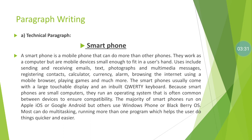A smartphone is a mobile that can do more than one thing — they work as a computer but a mobile device small enough to fit in the user's hand. Uses include sending or receiving emails, text messages, multimedia messages, registering contacts, calculating currency, setting alarms, browsing the internet, using a mobile browser, playing games, and much more.